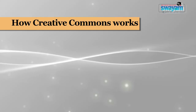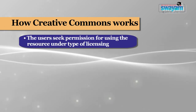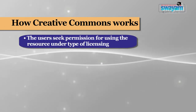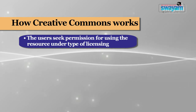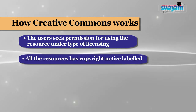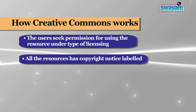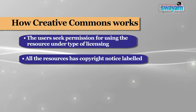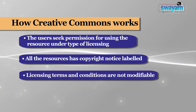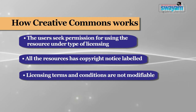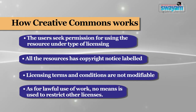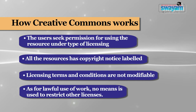All licenses under Creative Commons ensure the rights of the author over the copyrighted material and also grant copyright freedoms. Users are to seek permission for using the resource in a way that is restricted according to the licensing conditions. All copies of the work have the copyright notice intact and labeled on them. Either the licenses get published with the work or it includes a link to the license. Licensing terms and conditions are not modifiable in many circumstances, and no means is used to restrict other licenses for lawful use of work.